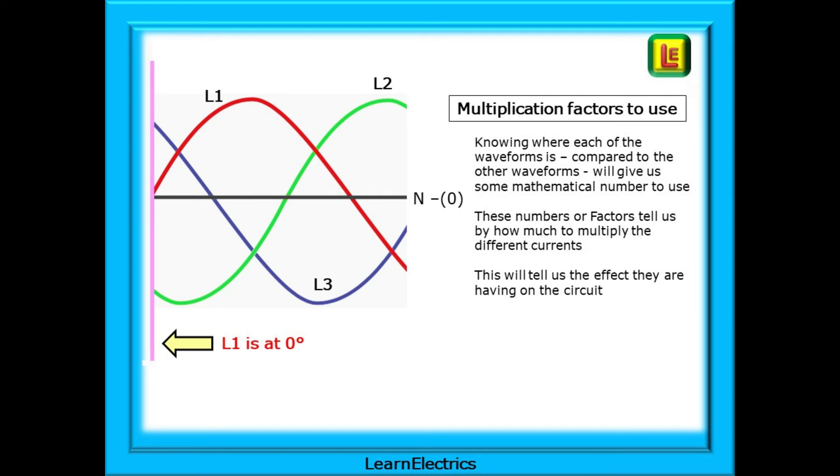What happens at the line conductors? What is switched on or switched off on an individual basis and whether the current flow is positive or negative and what part of the phase each waveform is in compared to the others will affect the current flowing at the neutral. They will be added or subtracted together. We can plot this by using multiplication factors. Knowing where each of the waveforms is compared to the other waveforms will give us some mathematical number to use, a value for the current that is flowing. These numbers or factors tell us by how much to multiply the different currents in the circuit.